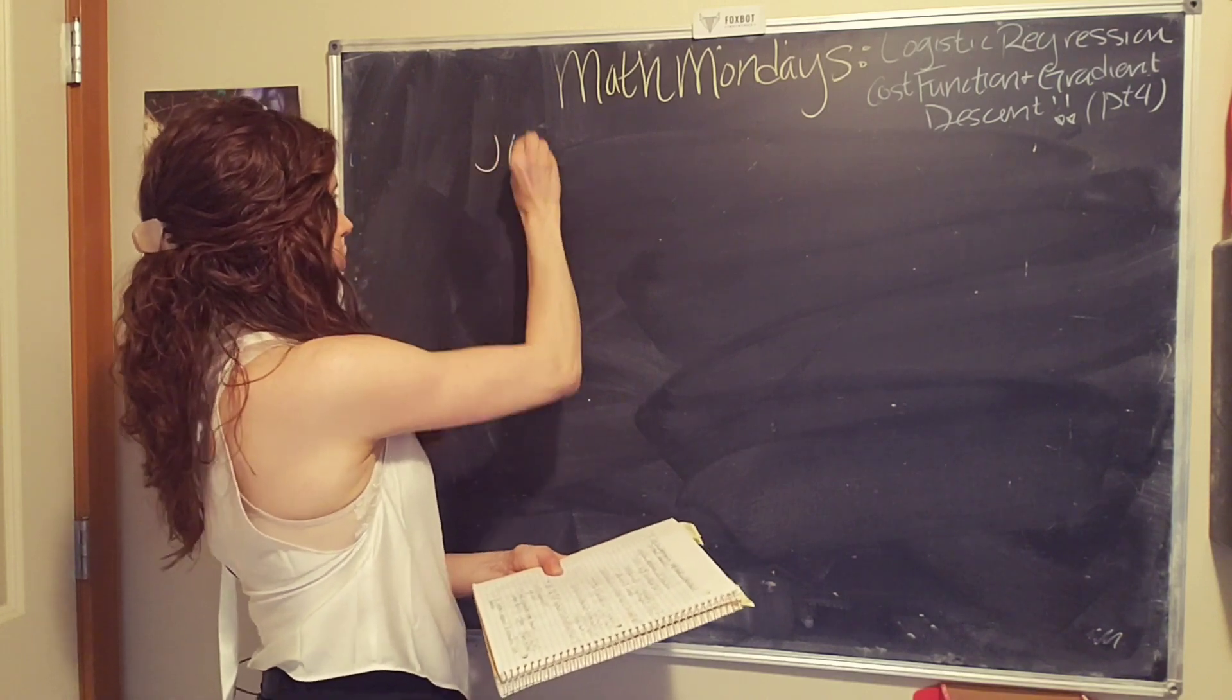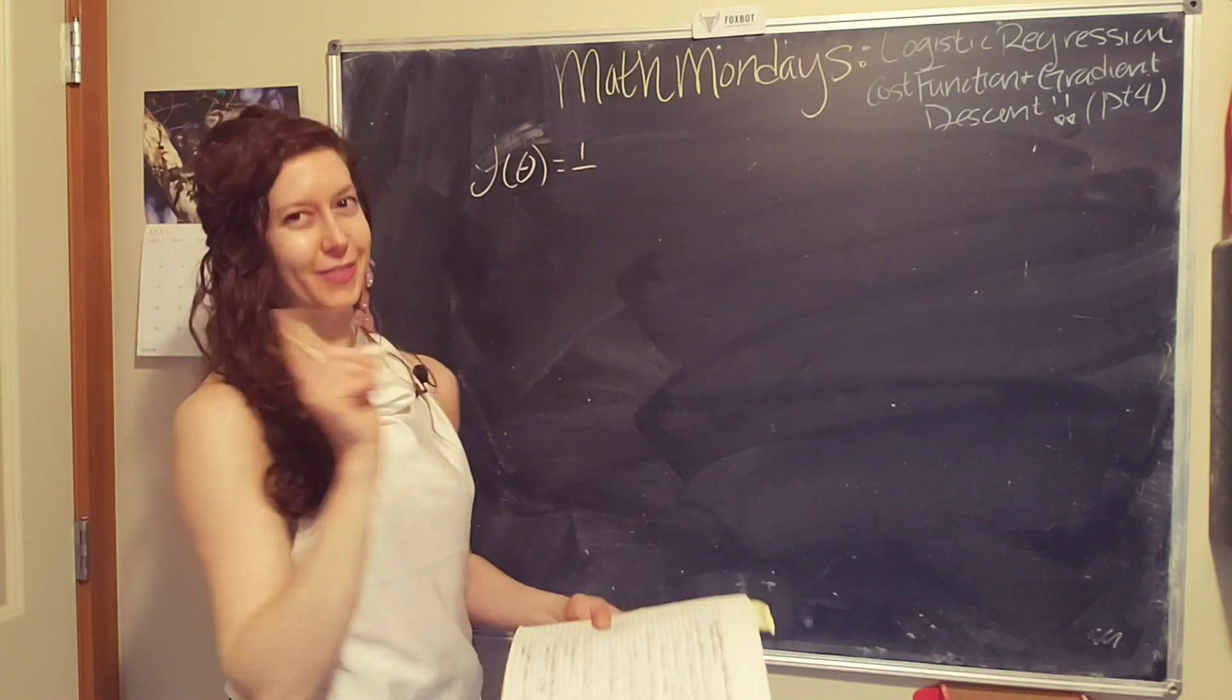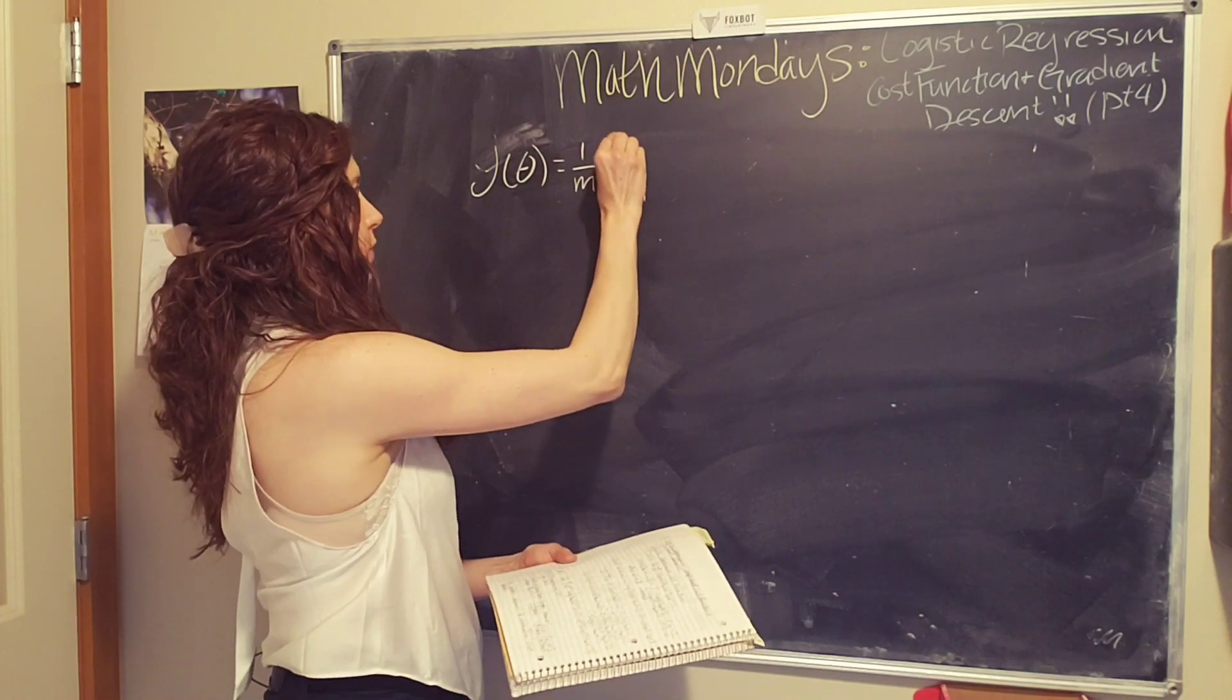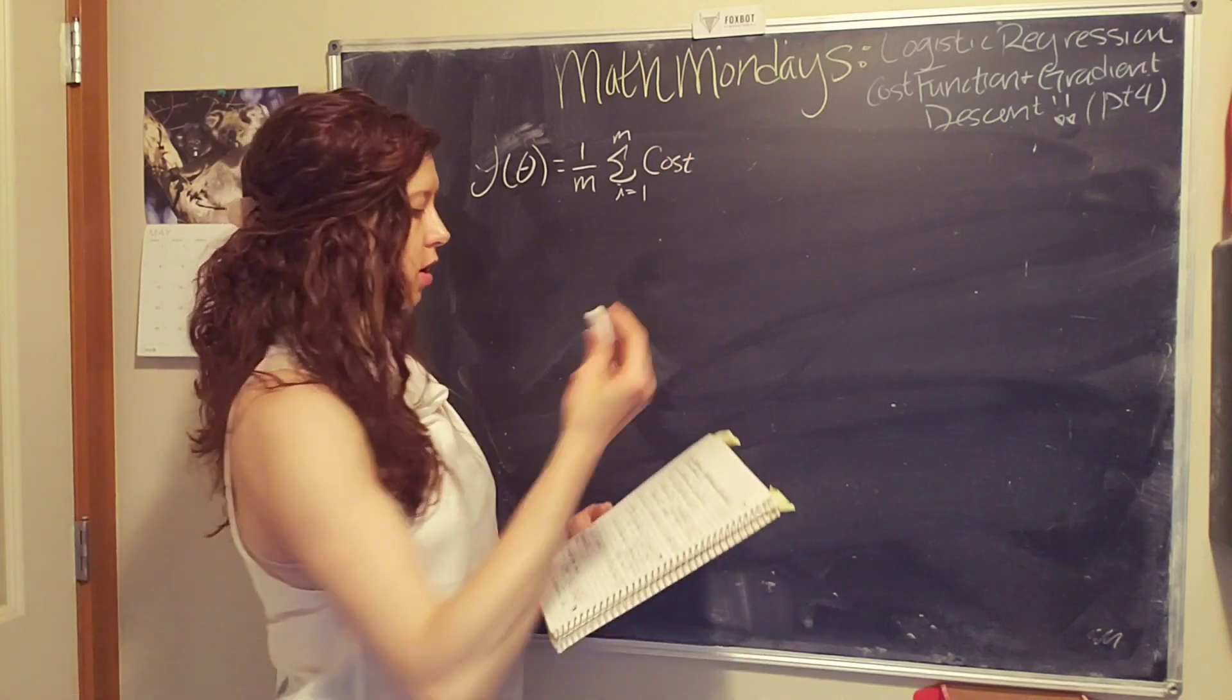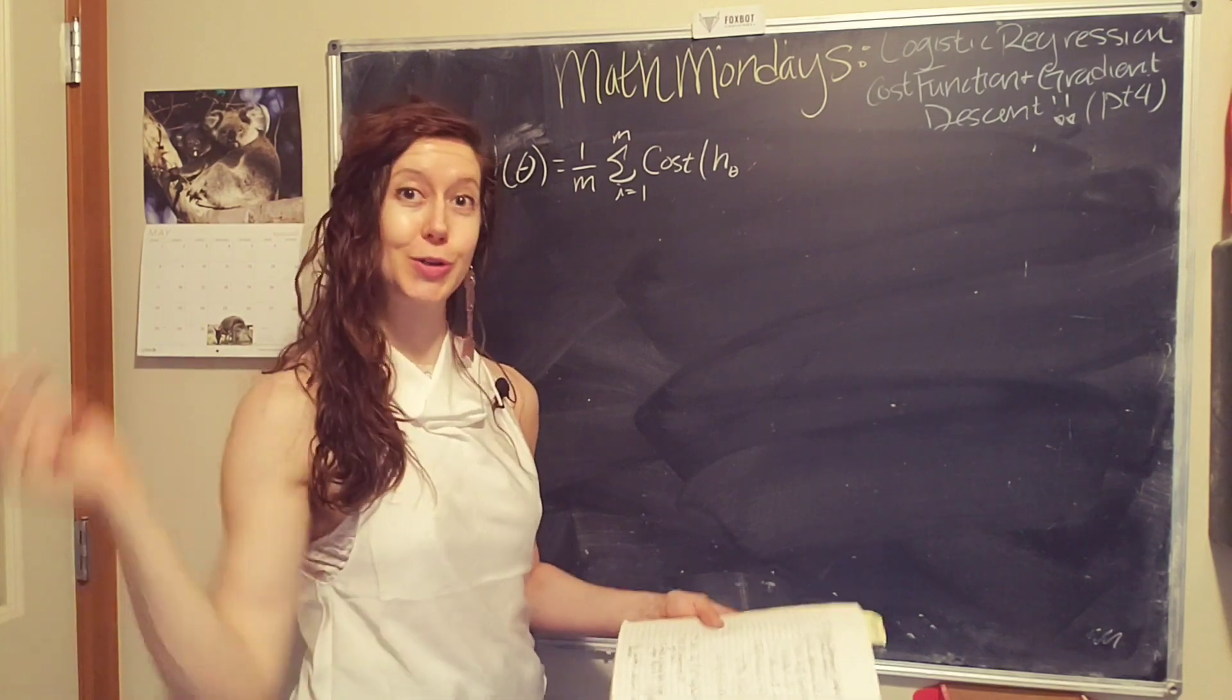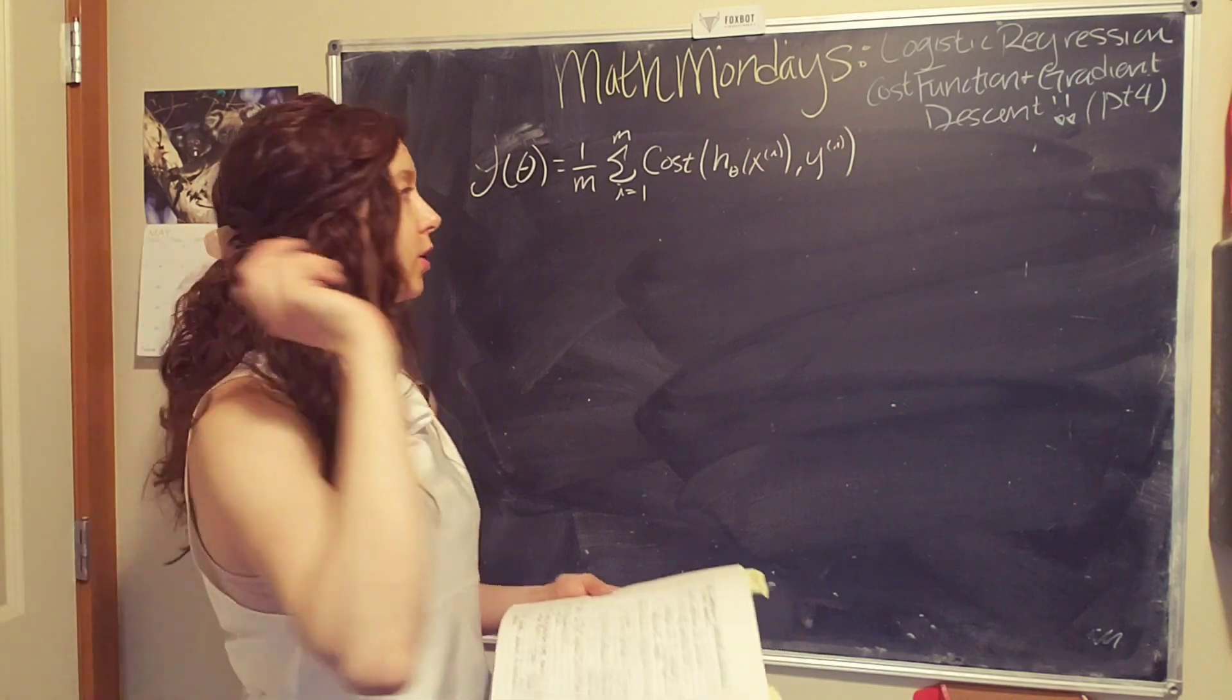So our cost function, j of theta, is a fancy average. So you divide by the total number of things in your data set, number of training examples. We run from i equals one to the last training example, and we are summing over the cost function, which is a function of our hypothesis function, what our machine learning algorithm is using to predict new values, and our actual predicted values. So cost function is the difference between actual value and predicted value.